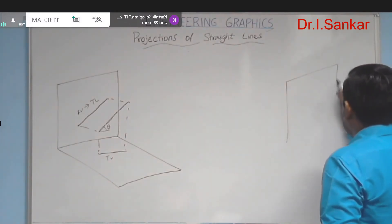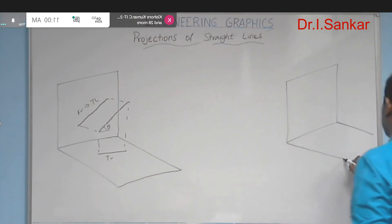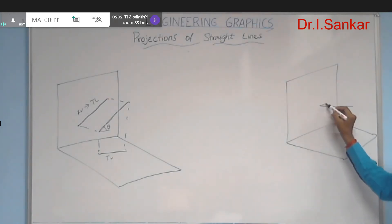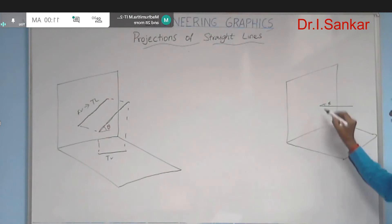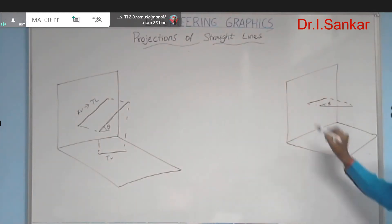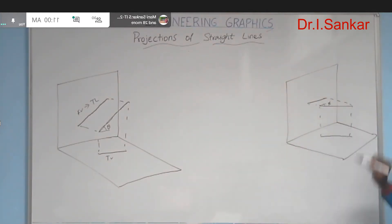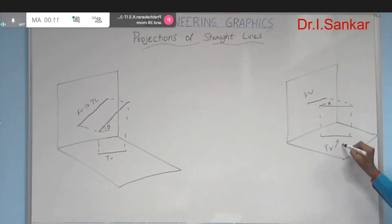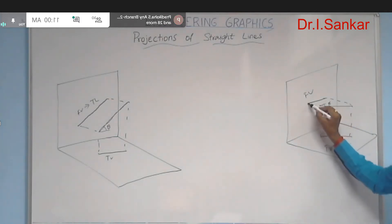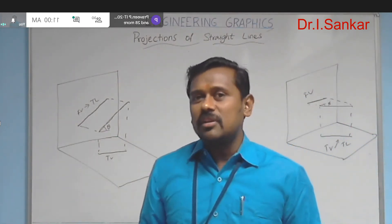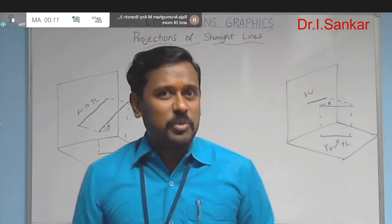In the same chapter, one more case was discussed: a straight line inclined to the vertical plane and parallel to the horizontal plane. In that case, the top view has the true length of the line — if the line length is 60mm, the top view also measures 60mm. The front view has the reduced or apparent length, and that reduction is based on the angle of inclination maintained between the line and the VP screen.